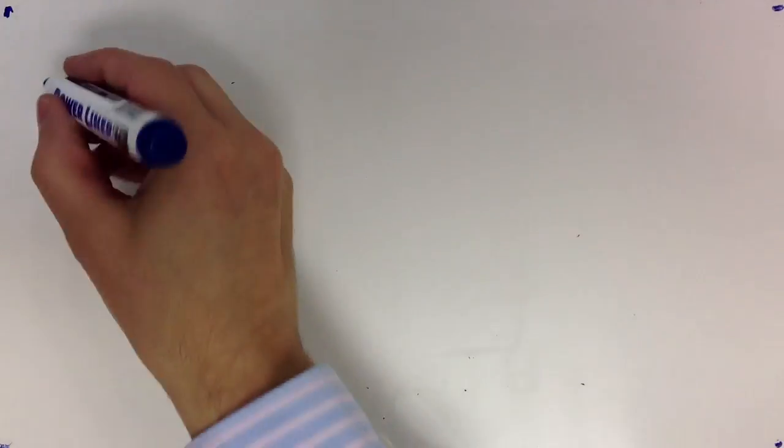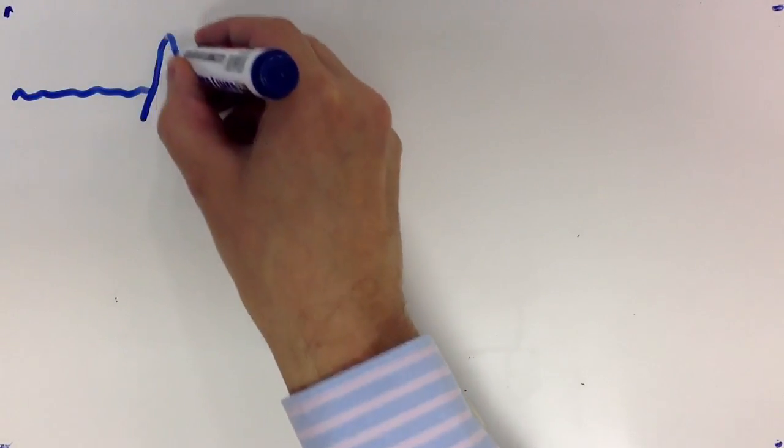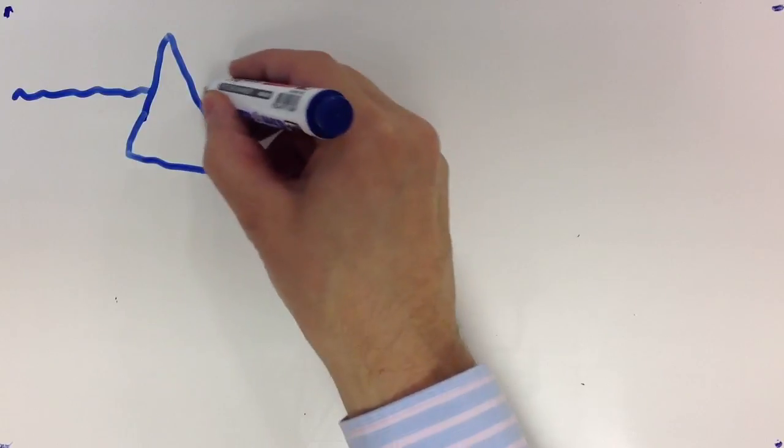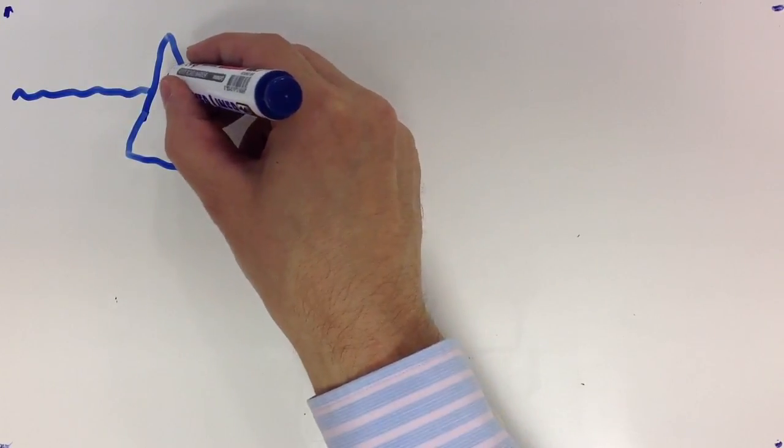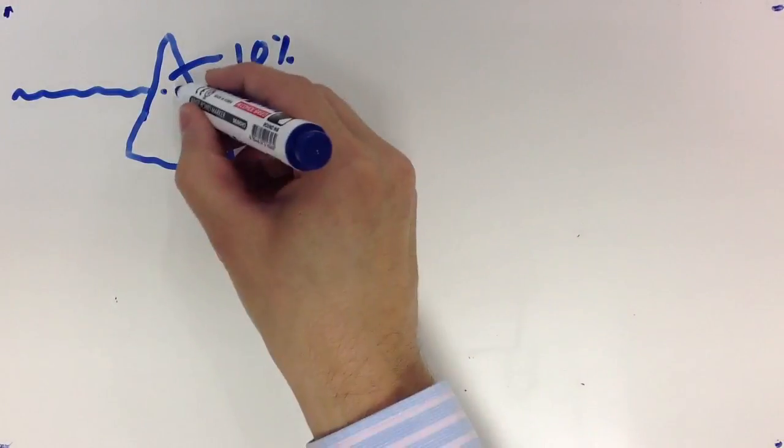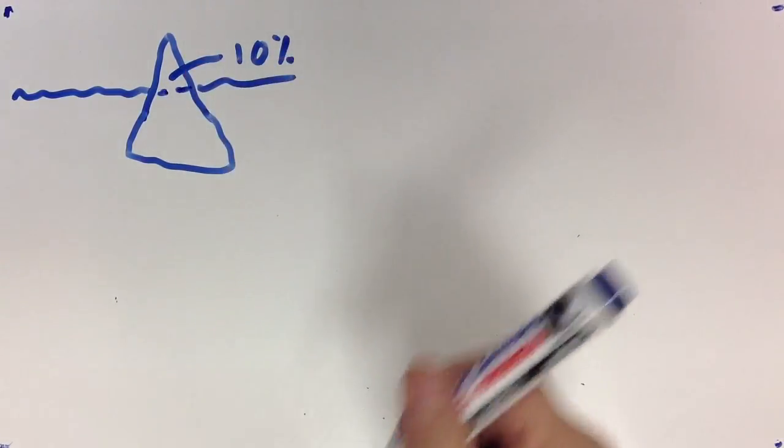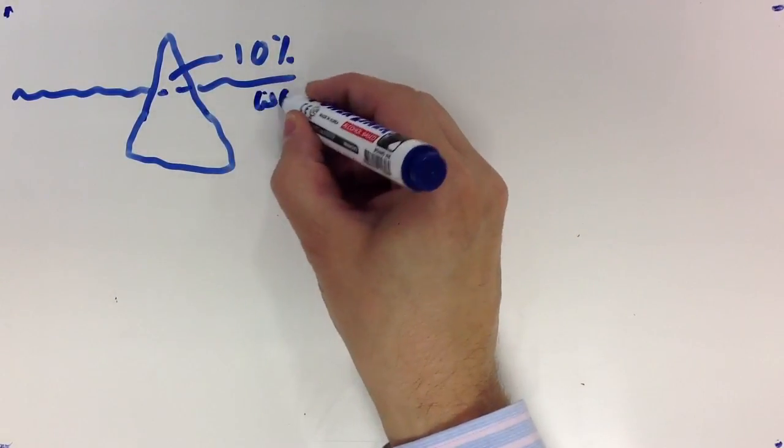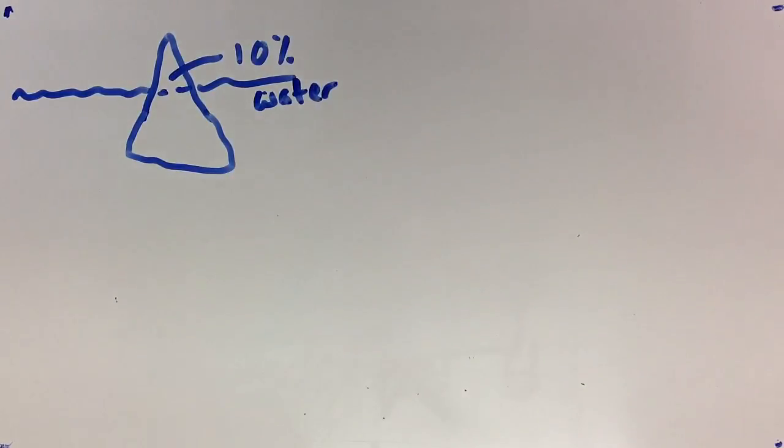Okay, so a quick video explaining how to find the density of an object that's not totally submerged in a fluid. Let's imagine we've got a fluid here, and we've got an object here, and it floats such that 10% is above the surface of water.